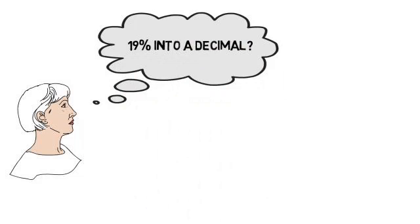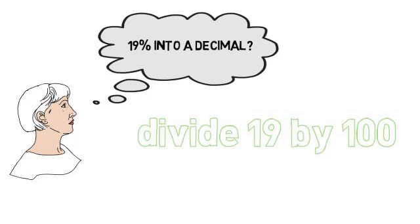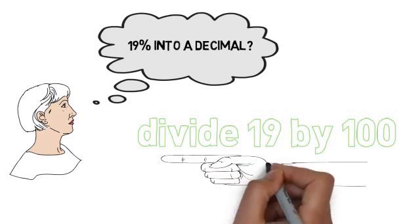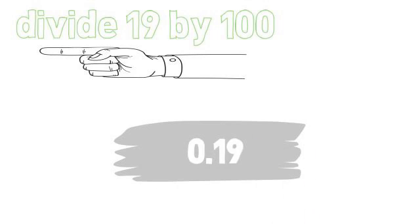How would you convert nineteen percent into a decimal? You would take the number nineteen, forgetting about the percentage sign for the moment, and you would divide nineteen by one hundred, taking the decimal point two places to the back, and that would give you 0.19.